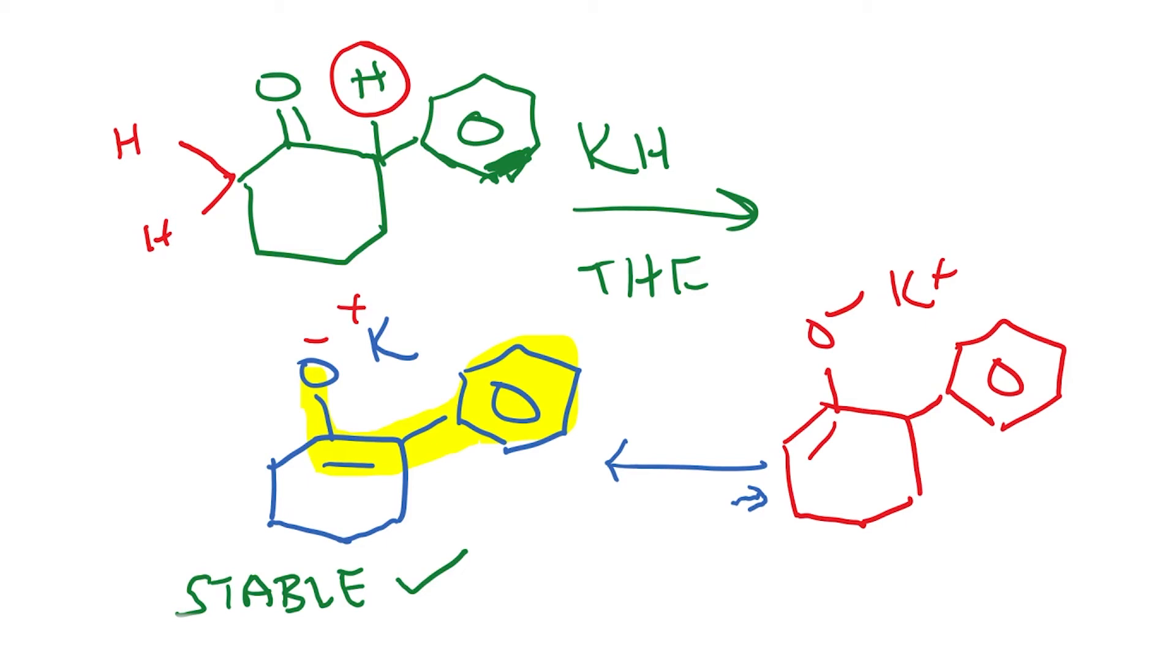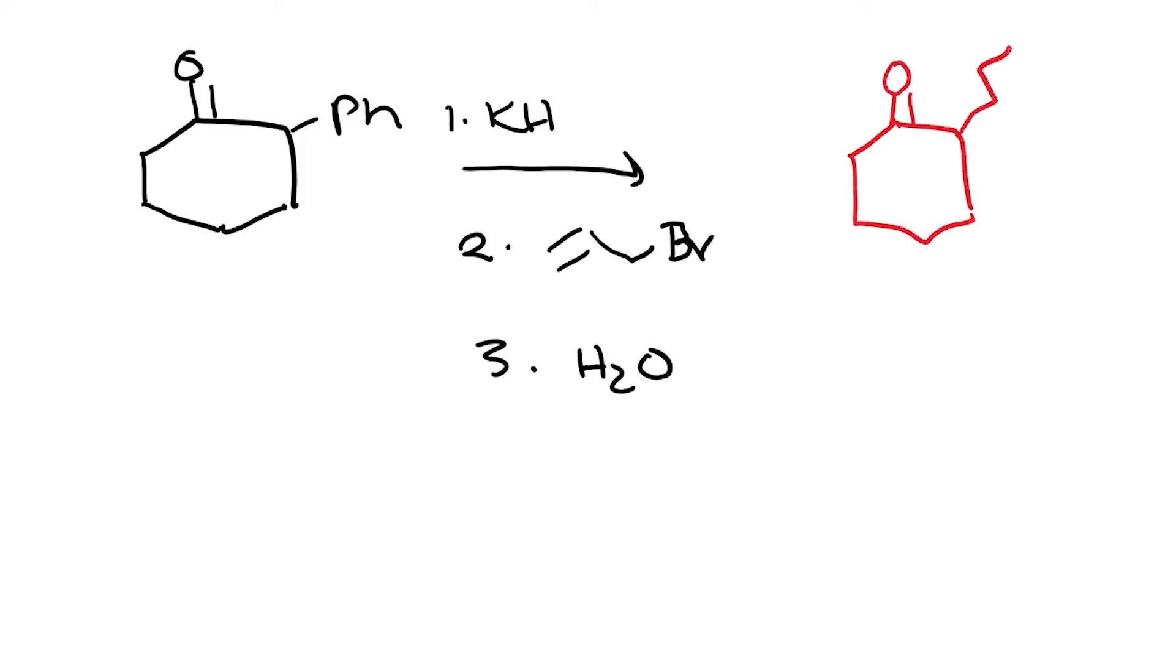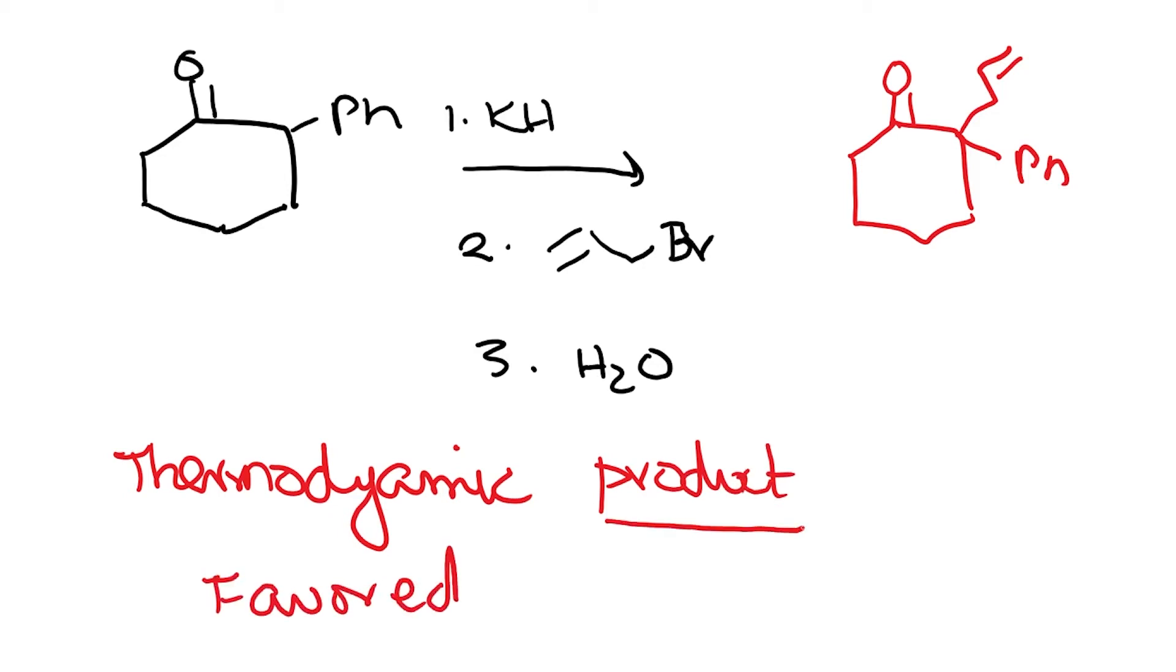Let me just write that out so that it's easy for us to follow. Number one is KH and then number two is allyl bromide and number three is H2O. The product that we end up getting is this. This tells us that this is under what is known as thermodynamic product or thermodynamic product is favored. And by product, I mean what I actually mean is the intermediate, the thermodynamic, the more stable enolate is formed which then gives you the product.